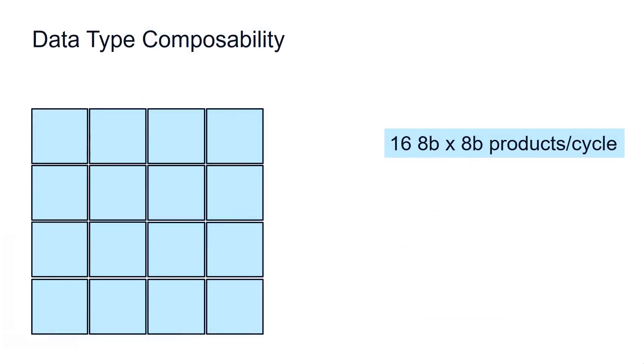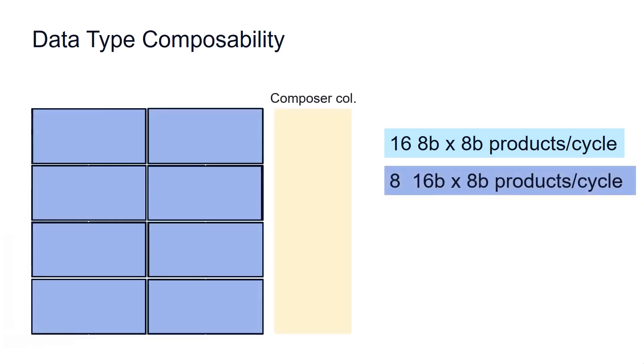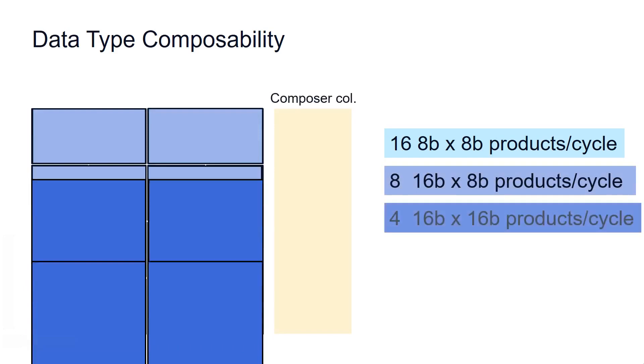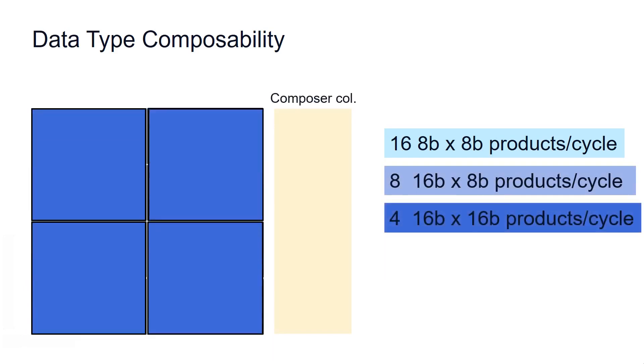Leconic also supports data composability. For instance, a grid of 4 by 4 PEs processes 16 8-bit by 8-bit multiplications per cycle. We can combine Leconic's PEs using a composer column to process 8 16-bit by 8-bit products or 4 16-bit by 16-bit ones.